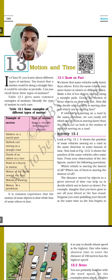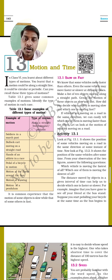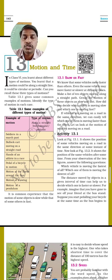In class 6th, you learnt about different types of motions. You learnt that a motion could be along a straight line, it could be circular, or it could be a periodic motion. So in motion we have different types: straight line motion, periodic motion, and circular motion.